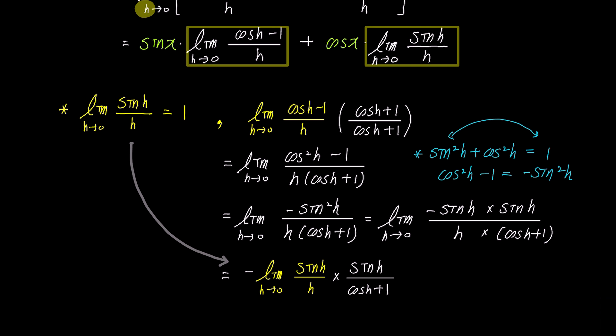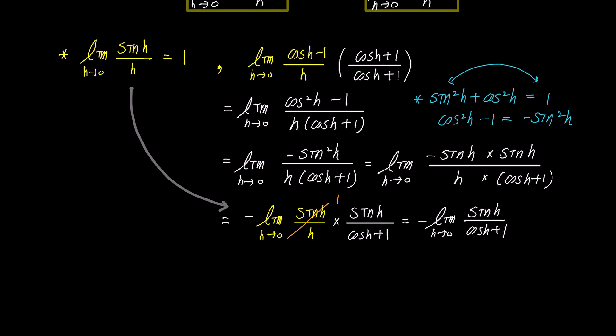As we have previously determined, the limit of sine h over h as h approaches 0 is 1. Therefore, the expression simplifies so that the numerator sine h approaches 0, and the denominator cosine h approaches 1. Ultimately, the expression becomes negative 0 over (1 plus 1), which simplifies to 0. Hence, the limit converges to 0.